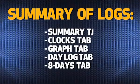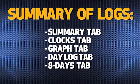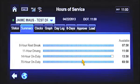Another important function of the QHOS system is the option to view a summary of your logs. There are several different ways to view a summary of your logs. You can use the Summary tab, Clocks tab, Graph tab, Daylog tab, or 8 Days tab. The Summary tab displays the time remaining on your 8-hour rest break, 11, 14, and 70-hour clocks. The first is the 8-hour rest break clock, which shows your available on-duty time until you must take a 30-minute consecutive break.